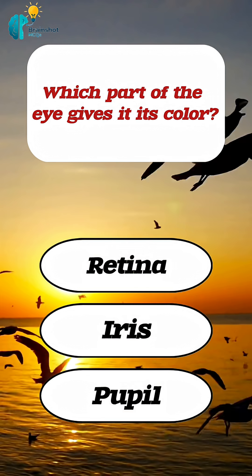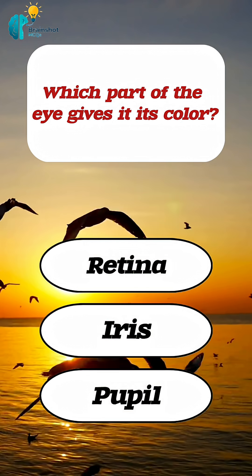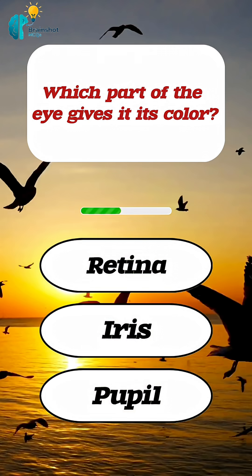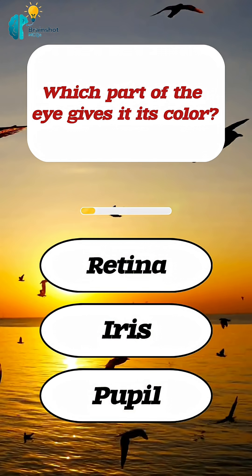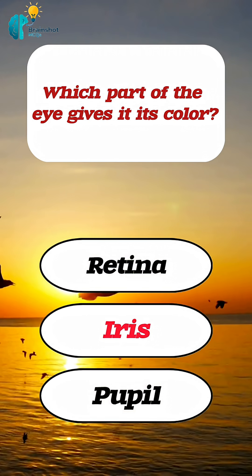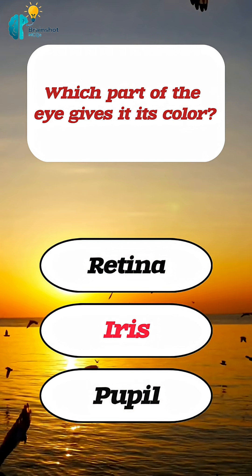Which part of the eye gives it its color? Correct. Answer: iris.